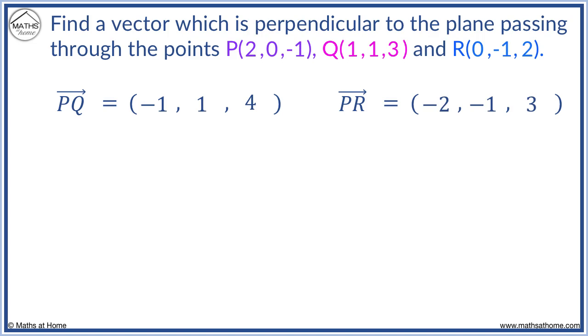Now we find the cross product by arranging the vectors one above each other like so. We find the i component by covering the i column to obtain 1, 4, -1, and 3.